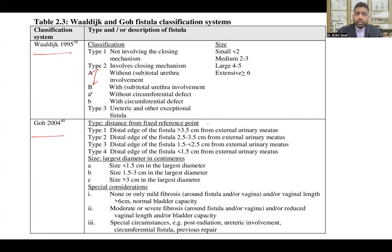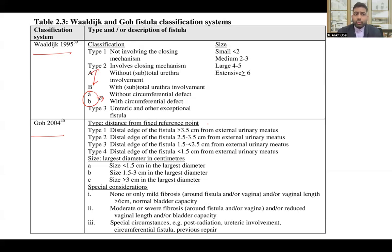There is another sub-classification A and B, which included whether a circumferential defect was present or not. We'll talk about the circumferential defect in a while. VALDI had limitations because it did not include many parameters which might predict the outcome of surgery.